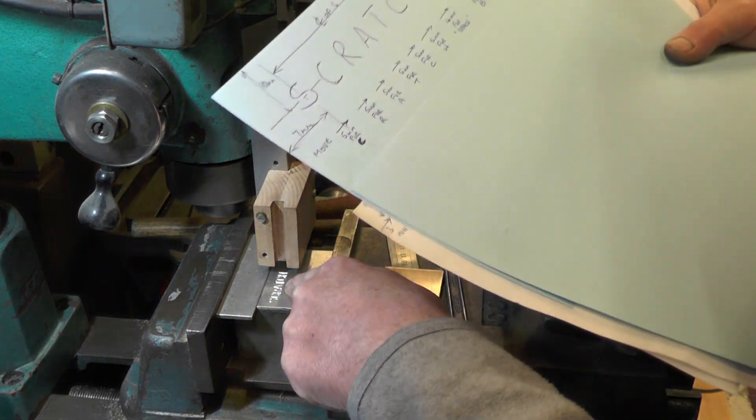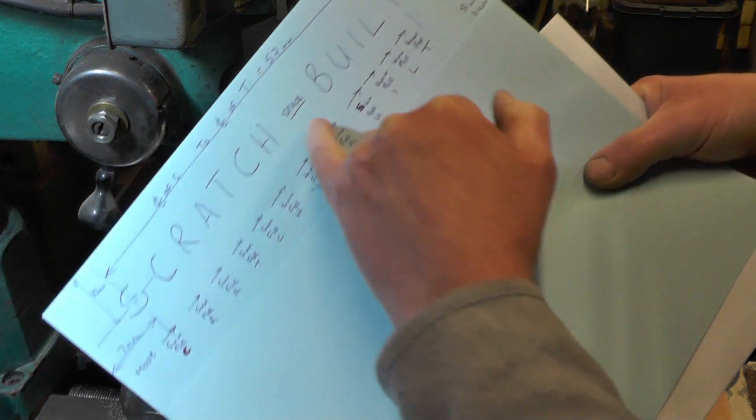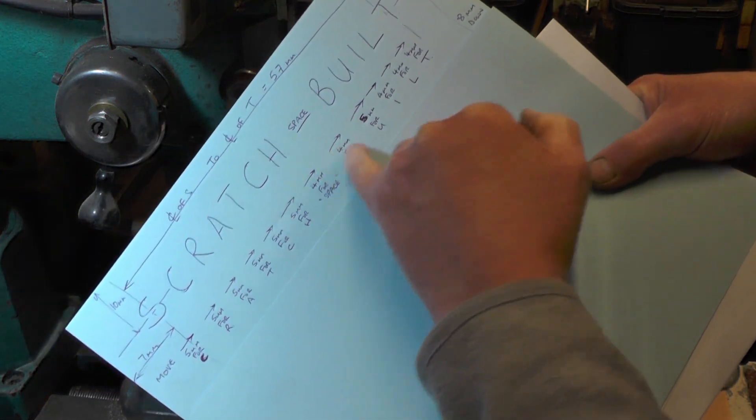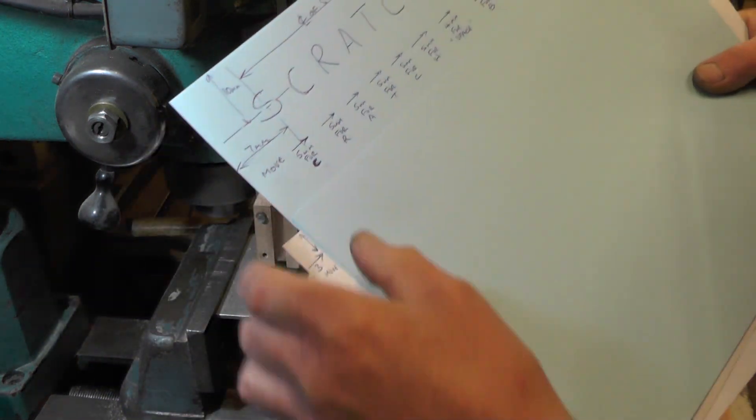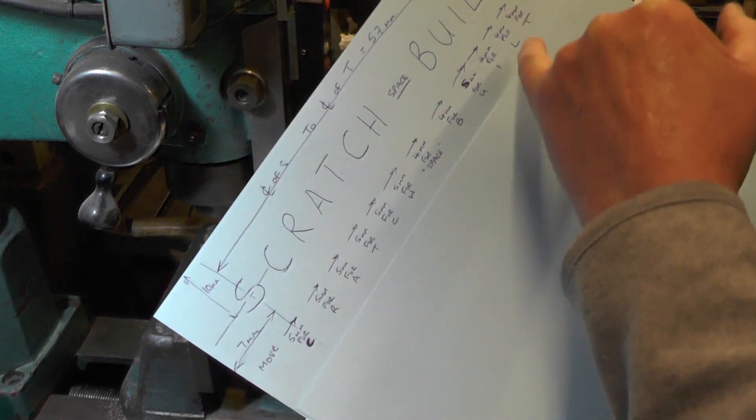So that's my first word, "Scratch." I need to put a space in now, and I'm going to move over 8mm—that's 4mm for the space and then 4mm for the B.